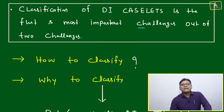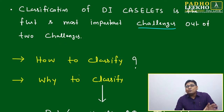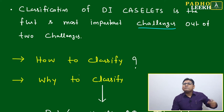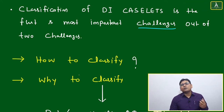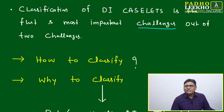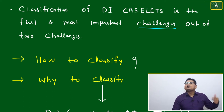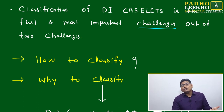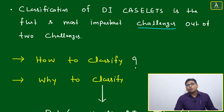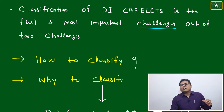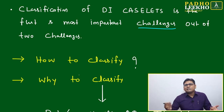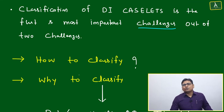Classification of DI caselets is the first and most important challenge. If you are not able to categorize the DI caselet, even after preparing for one year continuously for CAT, you will not feel confident. Maybe you have solved 200 or 300 caselets randomly, but you are not sure which type of caselet requires which approach — you are just doing hit and trial.